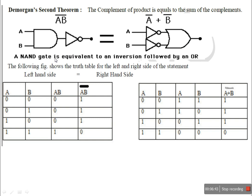A NAND gate is equal to an inversion followed by an OR. That is the NAND: inversion followed by an OR. This is the truth table for the left side and right side of the statement.